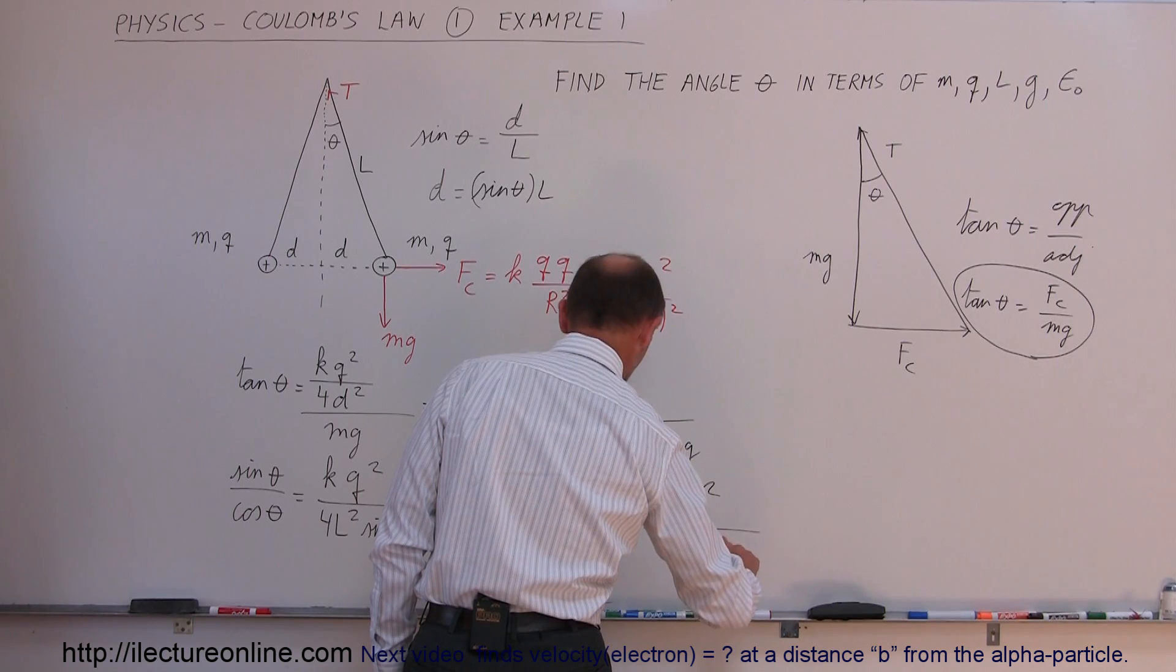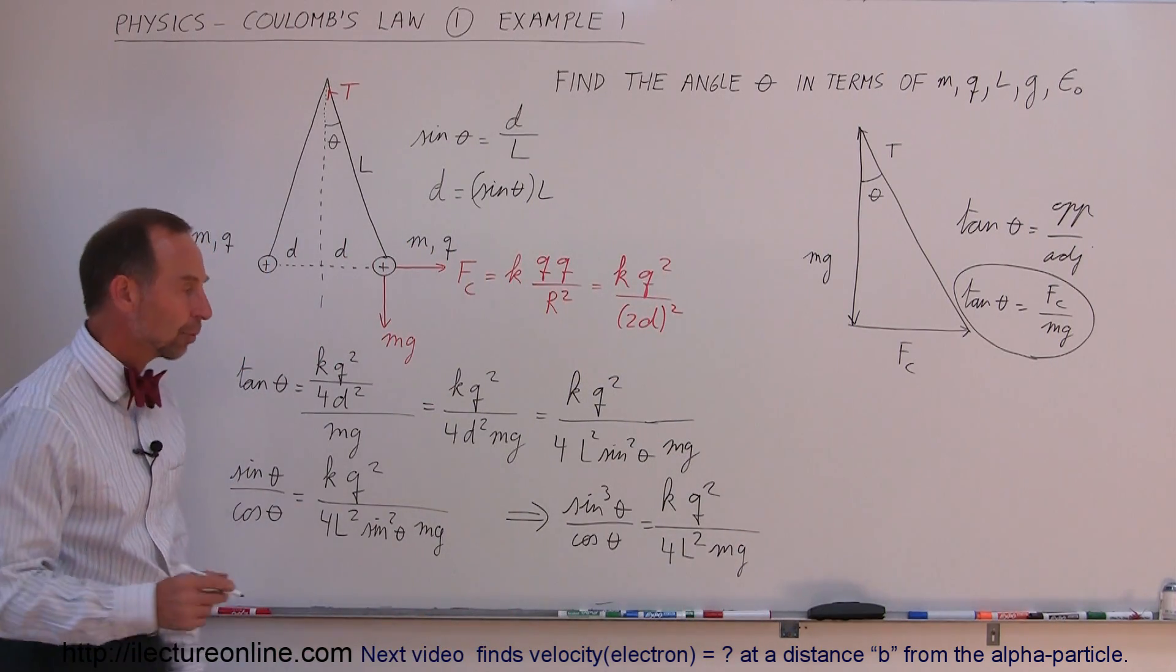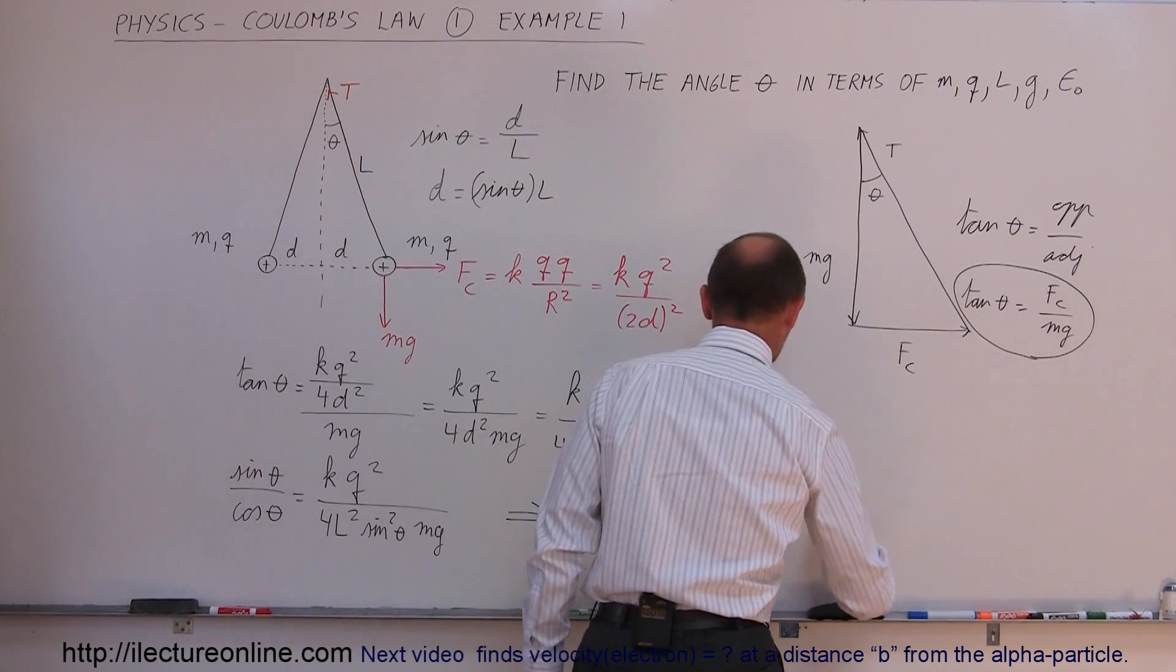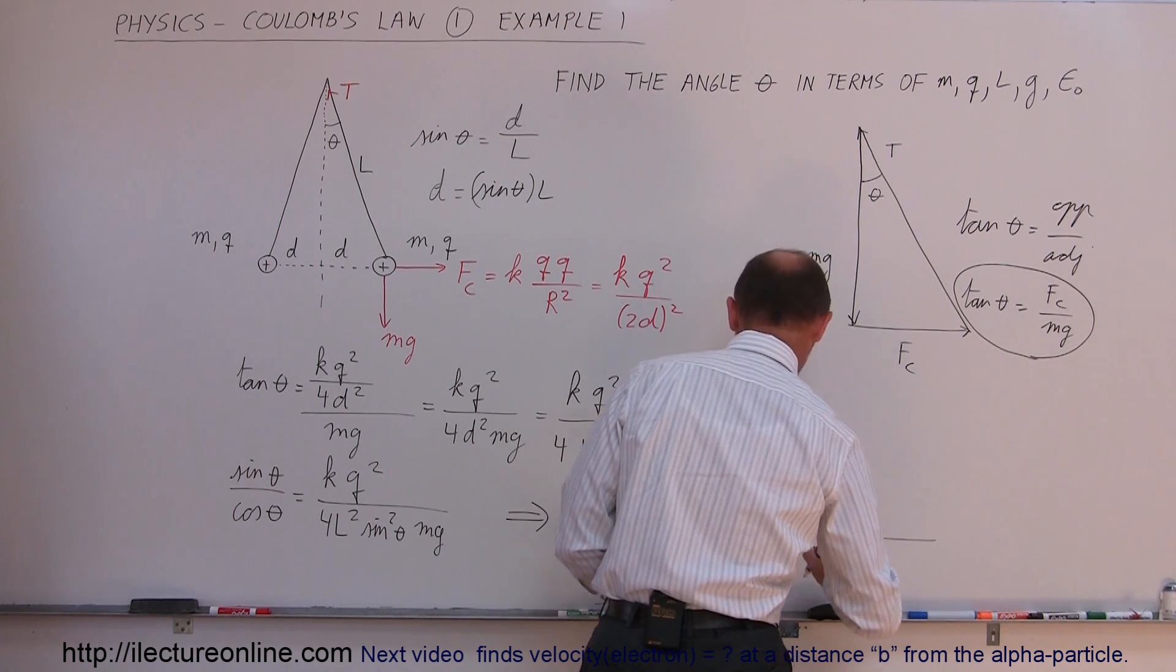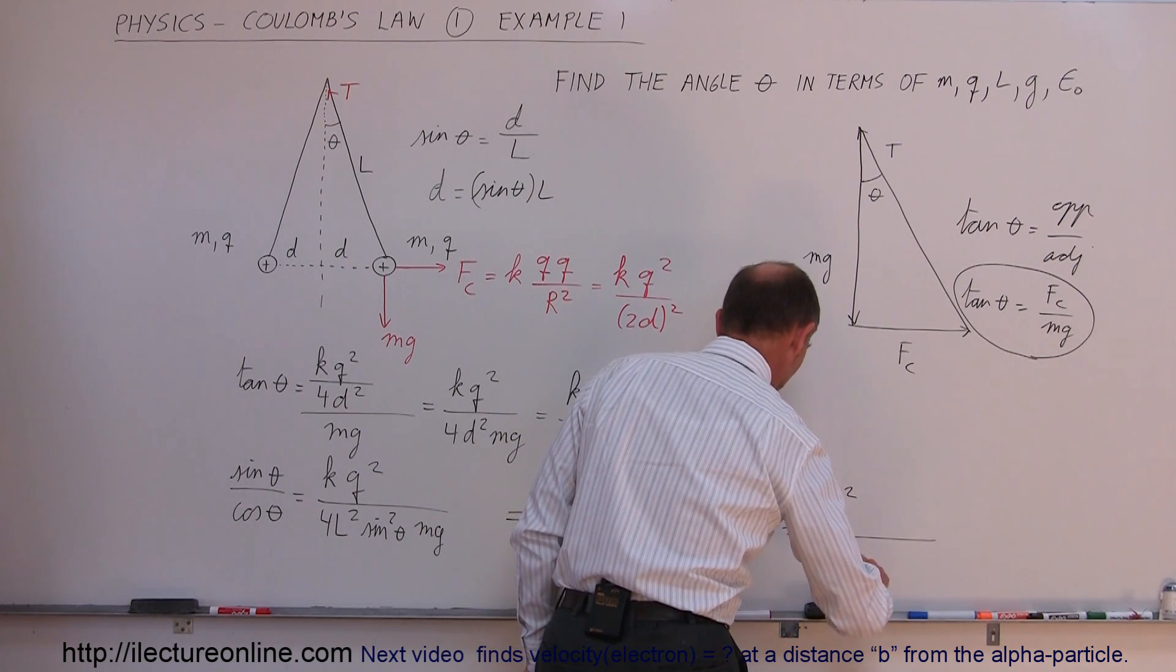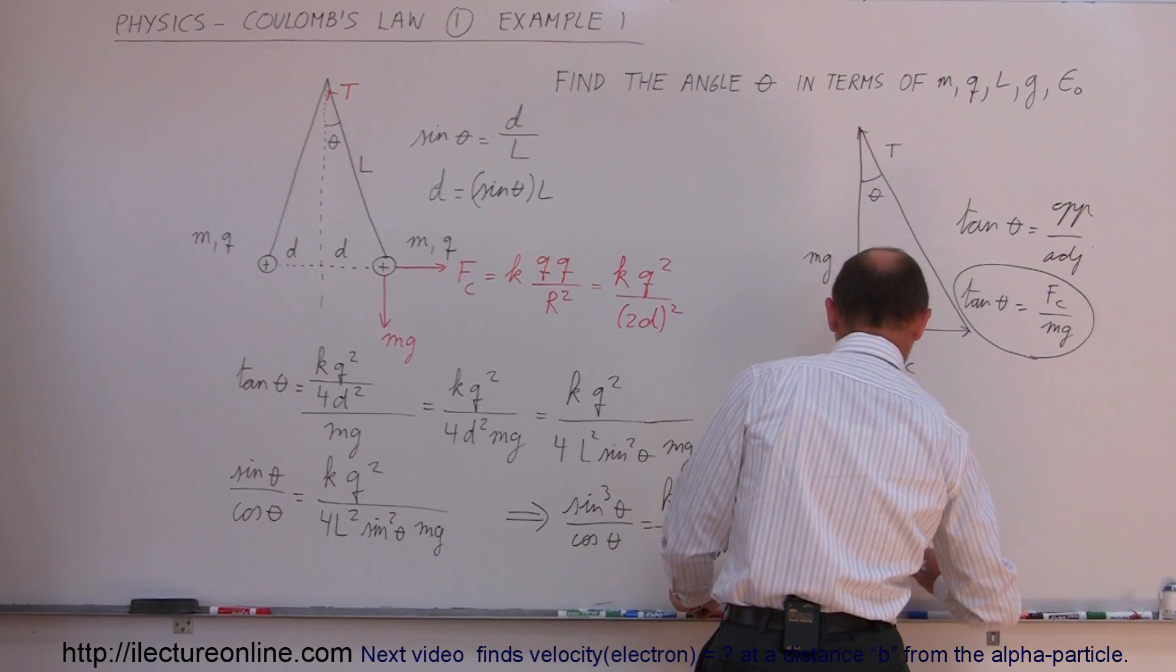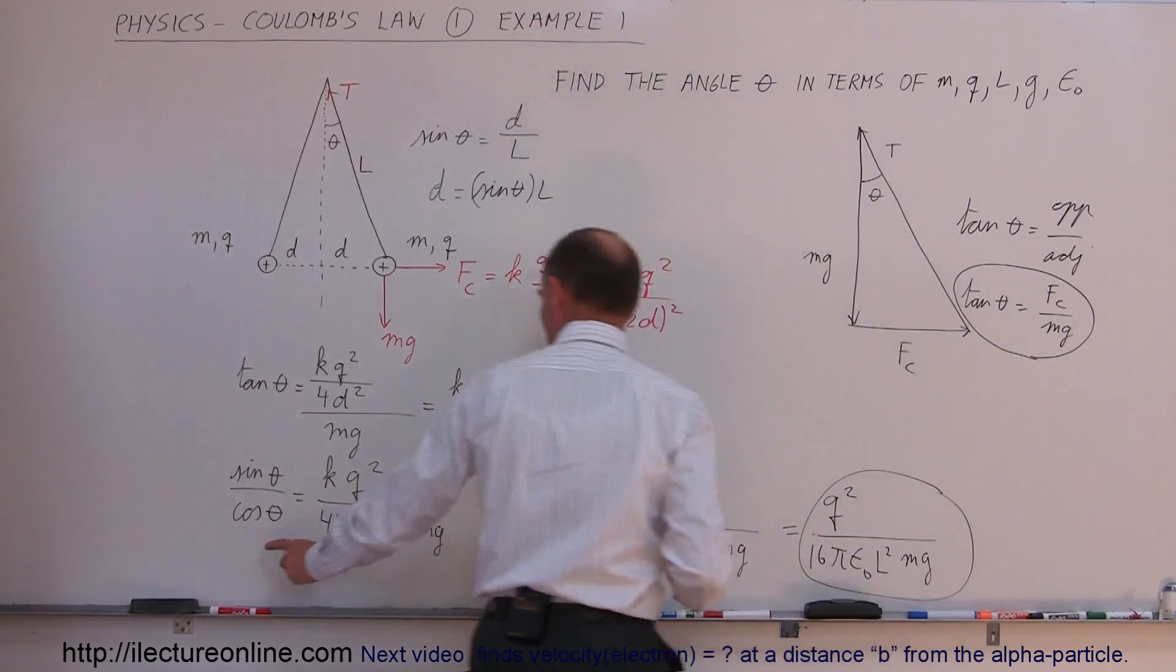Finally, you can write K in terms of 1 over 4 pi epsilon sub naught. When you do that, you can write this as Q squared divided by 16 times pi epsilon sub naught times L squared times M G. That's 16 because the 4 came from the K and I have a 4 there. That is the relationship between the angle theta and the other variables right there.